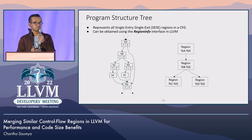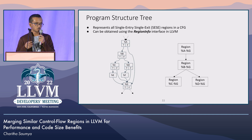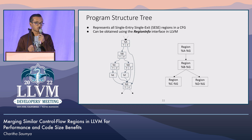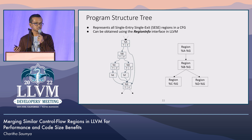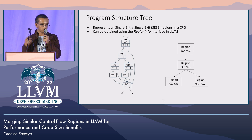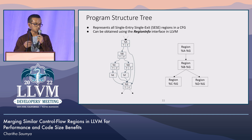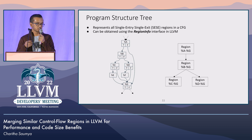The first step of our transformation is identifying single-entry, single-exit (SESE) regions in a CFG. For this, we use a data structure called the program structure tree, which is a hierarchical representation of all SESE regions in a control flow graph. We obtain this using LLVM's region info interface. For the example CFG in this slide, we have four regions: the topmost region A-to-G, a sub-region B-to-G, and two child regions C-to-G and D-to-G, which we are interested in merging.